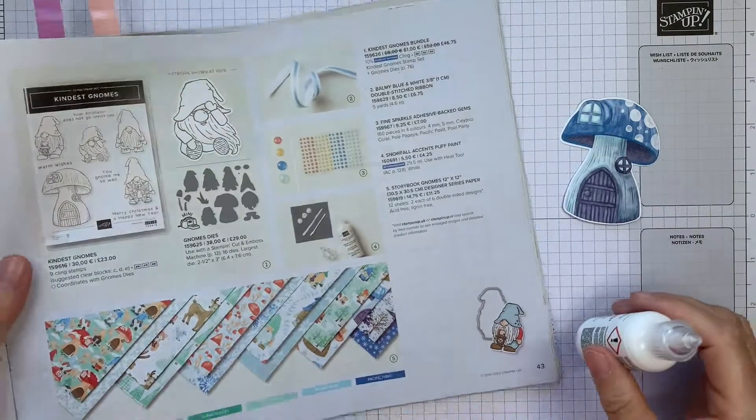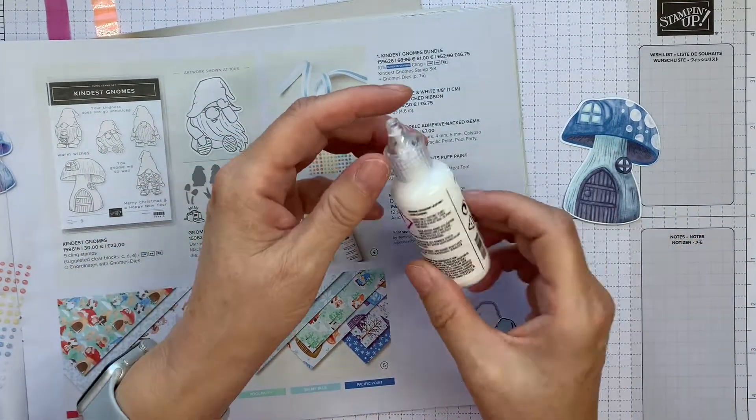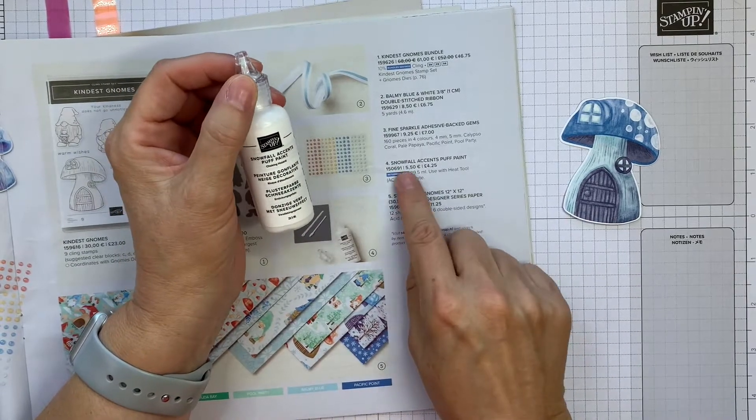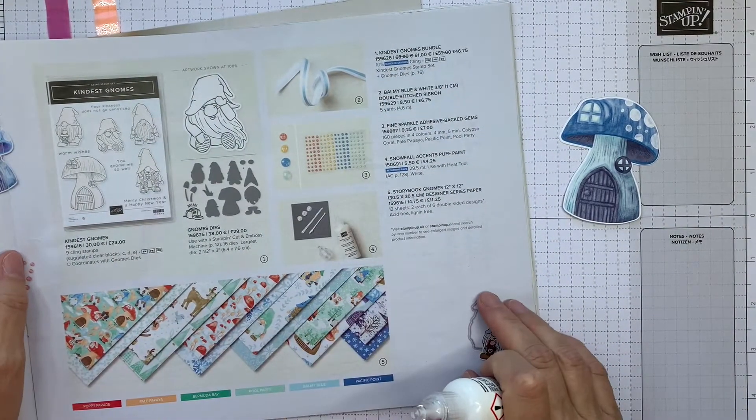Hi, it's Sarah here from Crafting & Stamping and I'm here with another quick tip. My tip today is around using the Snowfall Accents Puff Paint that comes as part of the Storybook Gnome Suite.